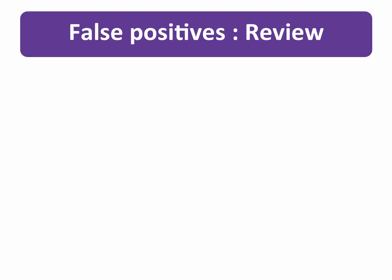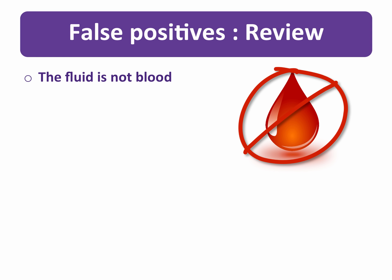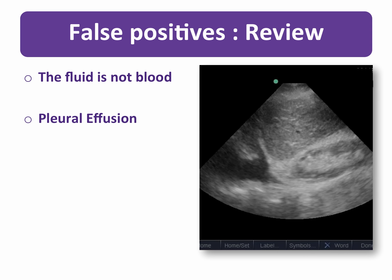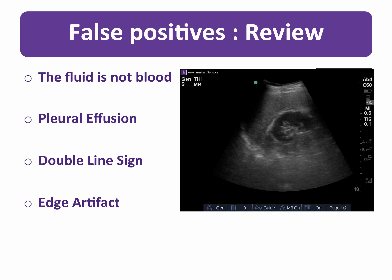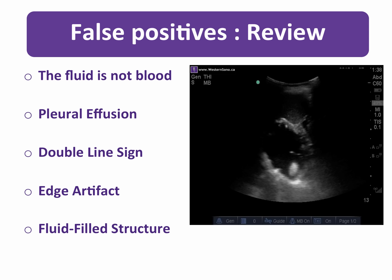Let's review the false positives. The fluid is not blood and is actually ascites, peritoneal dialysate, or several other sources previously reviewed. The fluid is above the diaphragm and is instead a pleural effusion. There is no free fluid and what you are seeing is the double line sign, representative of perinephric fat. You are in fact seeing edge artifact. Or you are mistaking stomach for free fluid in the left upper quadrant.